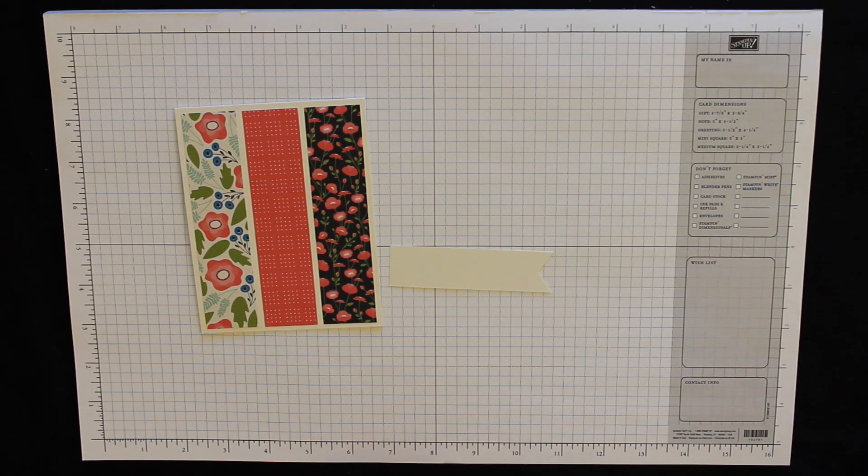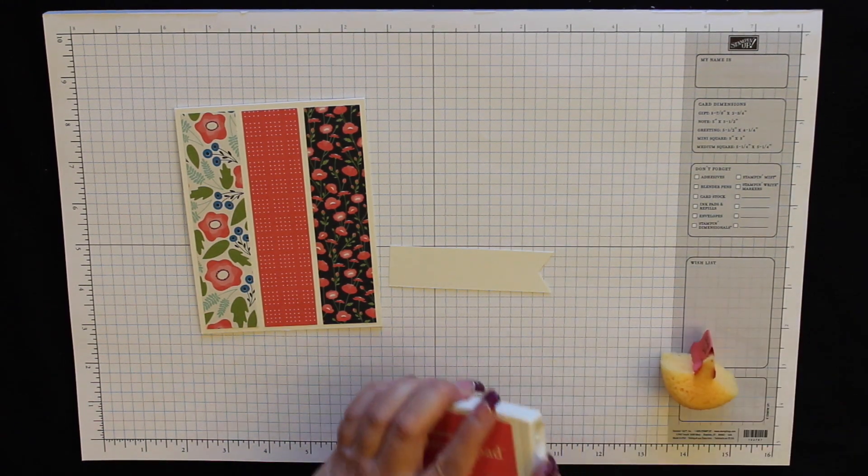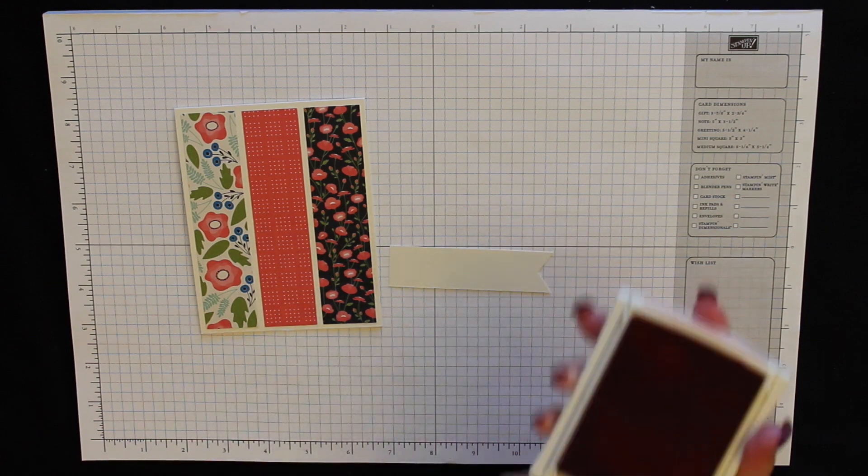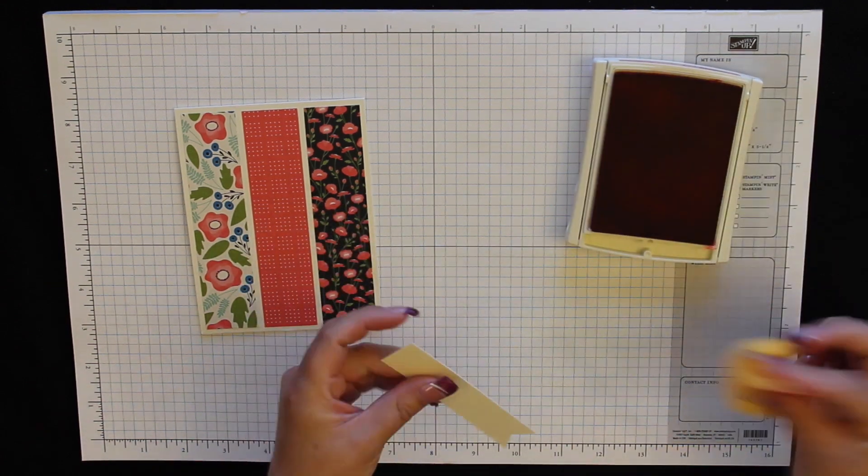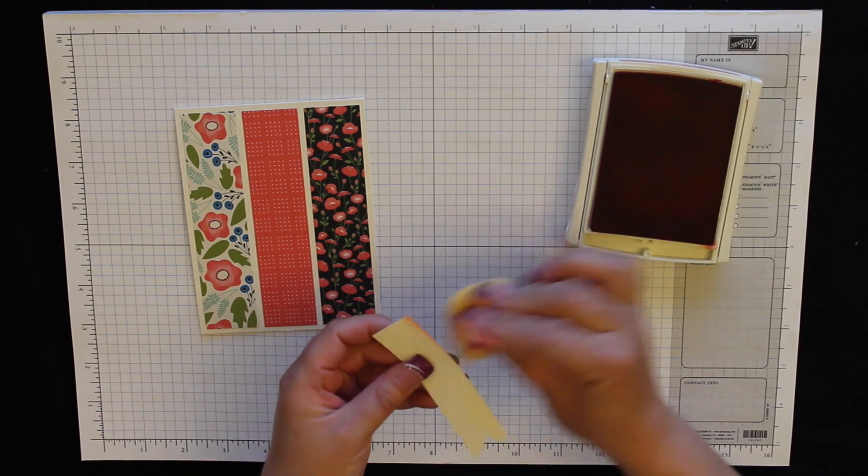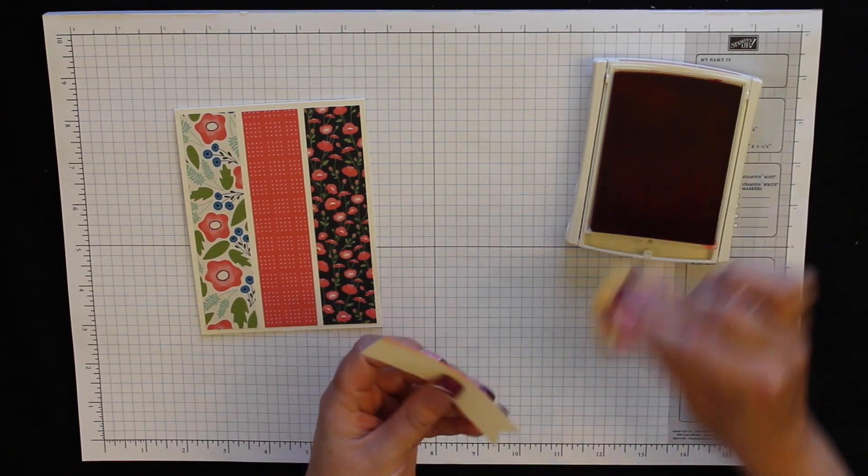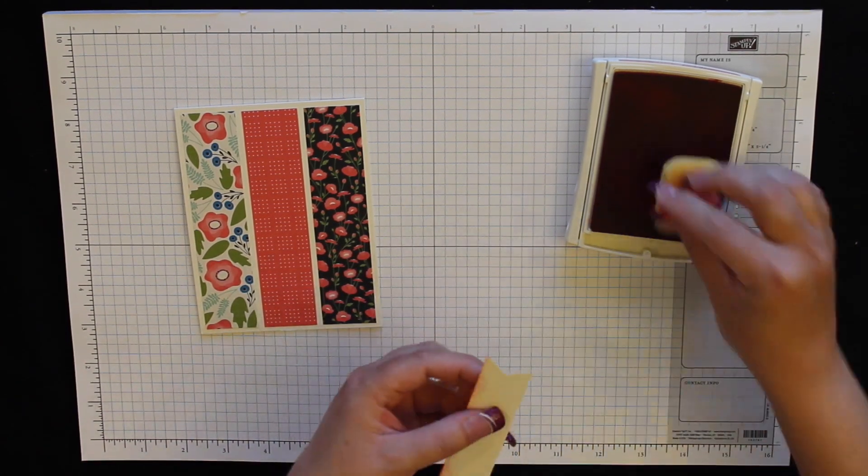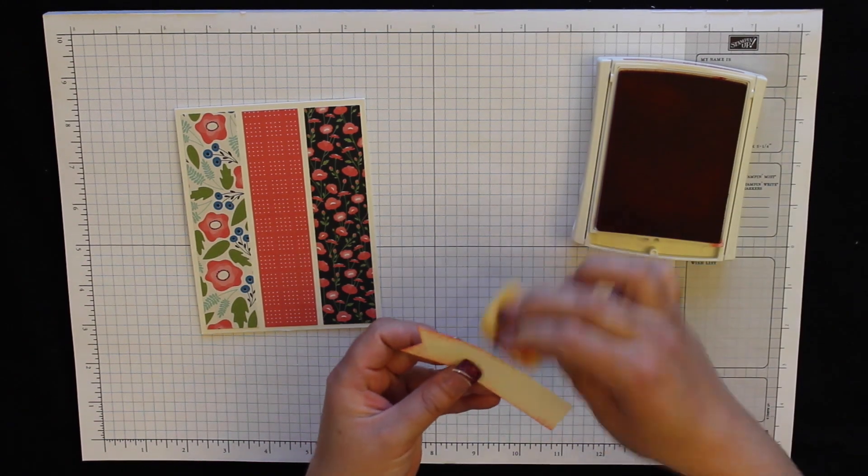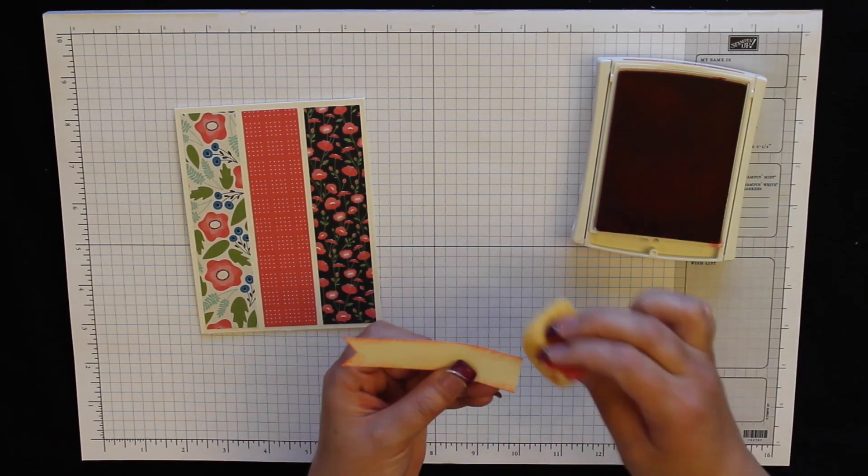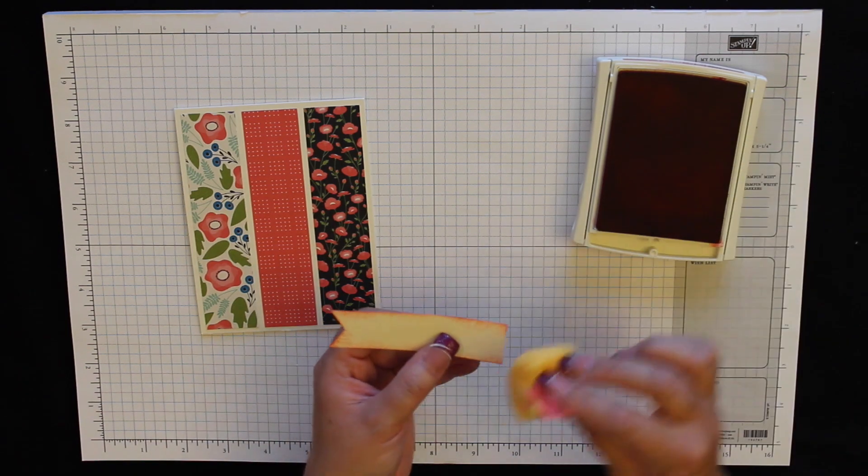I wanted to add a little bit of color so I have my Calypso Coral ink pad and I have my little sponge and I'm just going to sponge around the edges to give it some bright color. And this is one of the coordinating colors from the Designer Series paper stack.